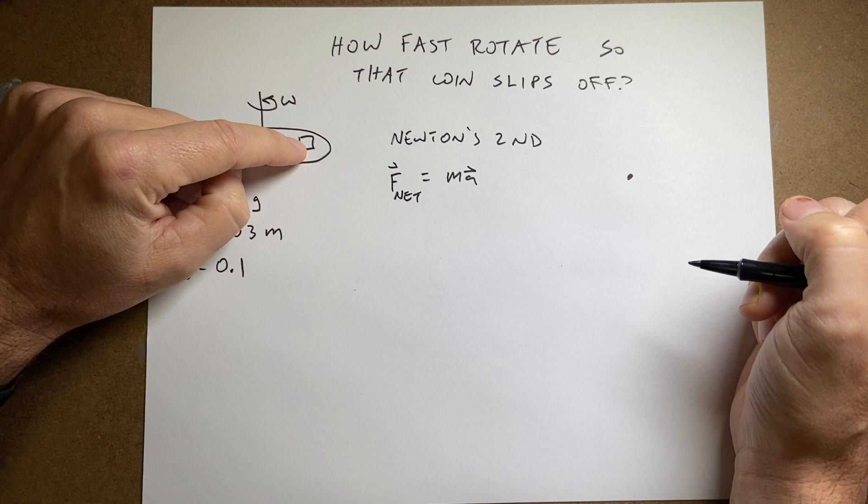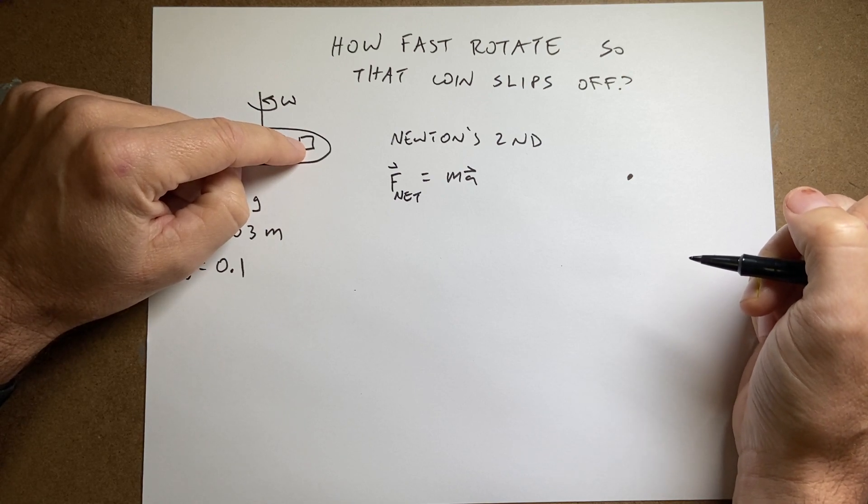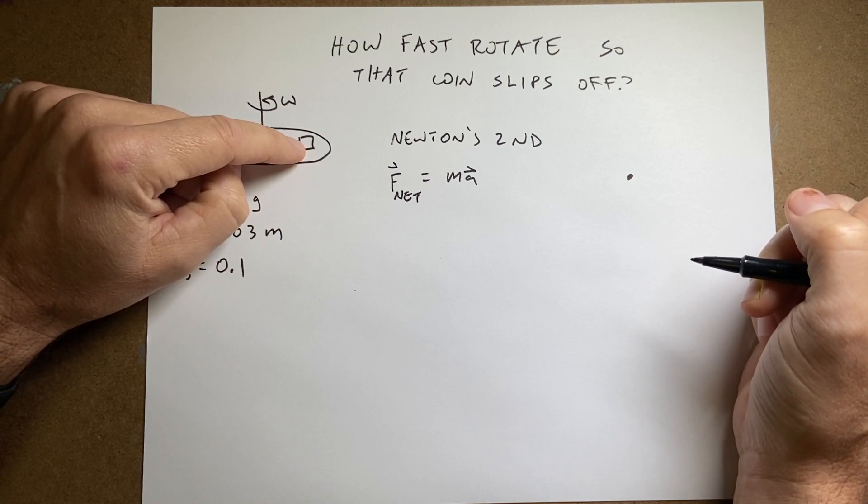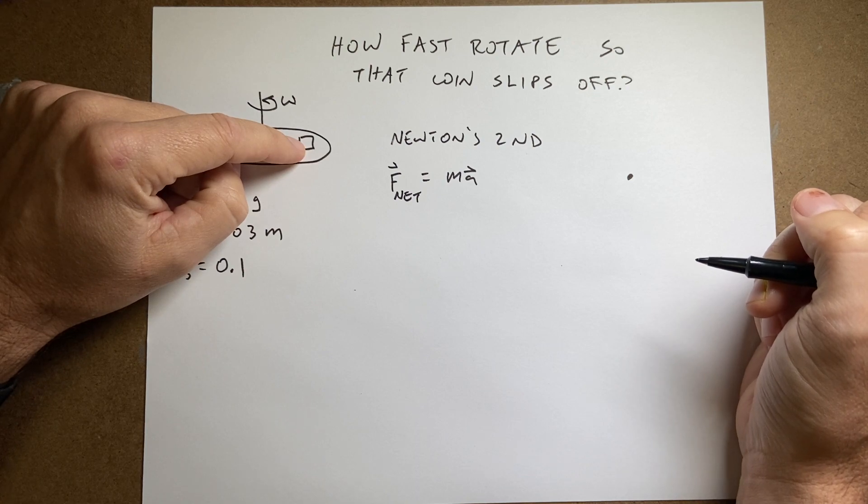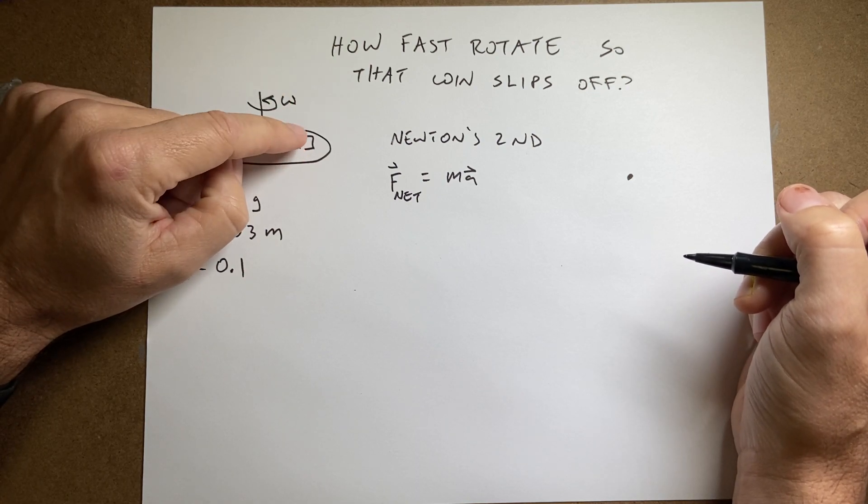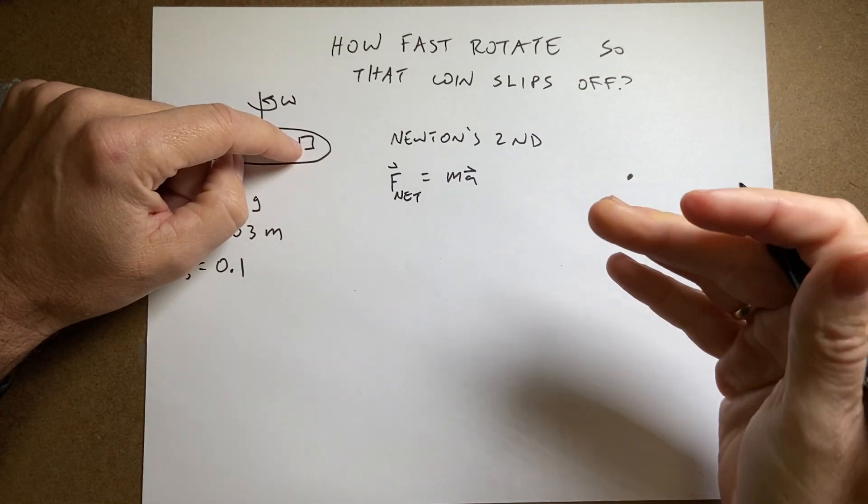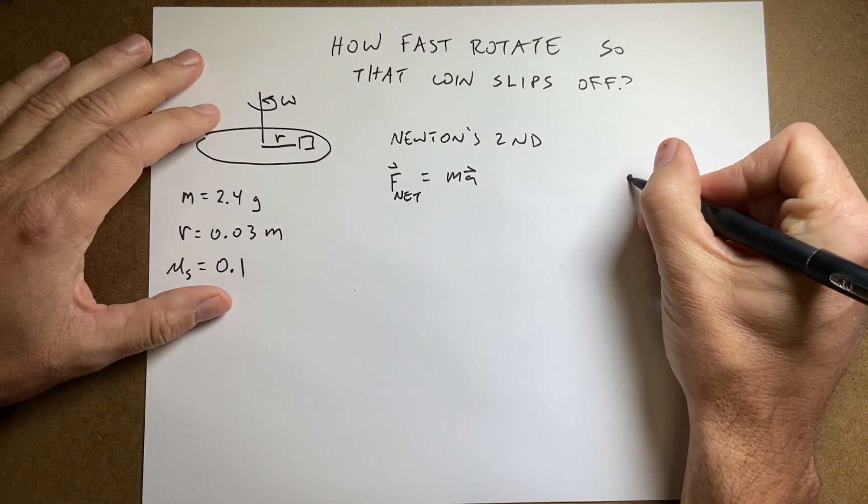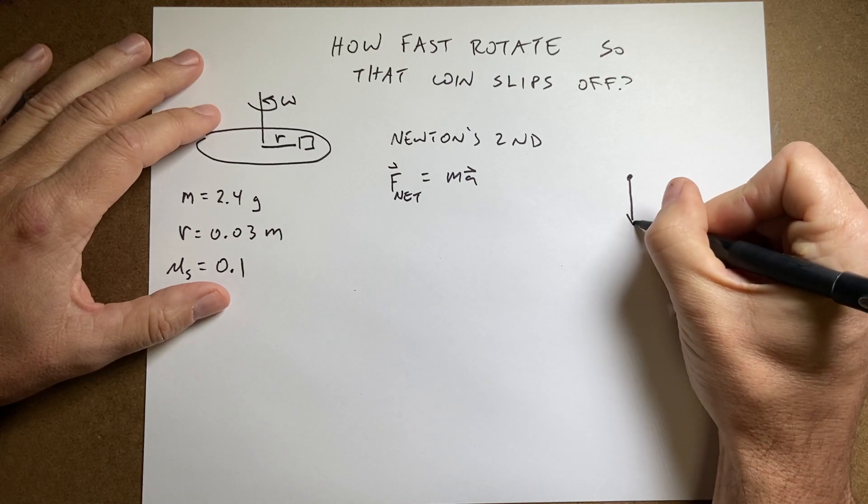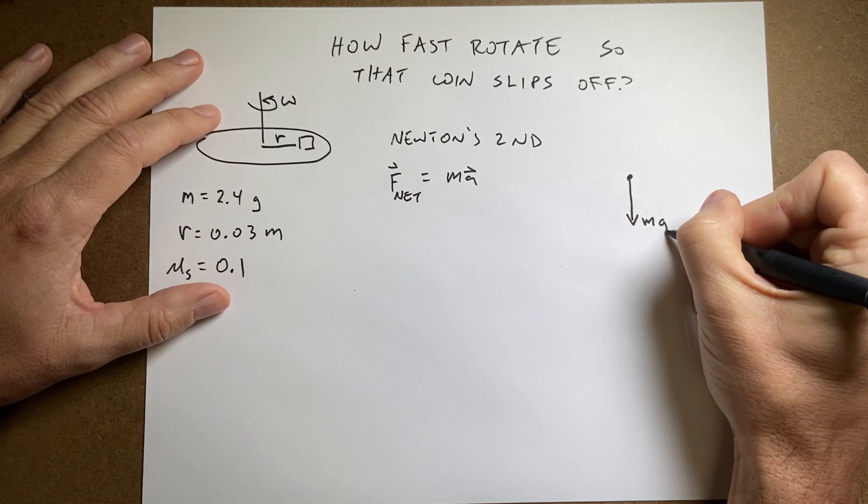Contact forces and long-range forces. So long-range forces are things that interact with it without touching and contact is things that actually touch it. So what long-range forces would be on an object like this penny? Well the earth pulls down on the penny. So there's a gravitational force. So that's going to be pulling down like that.